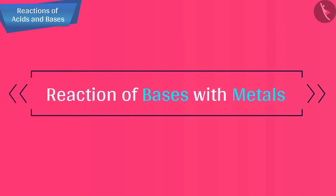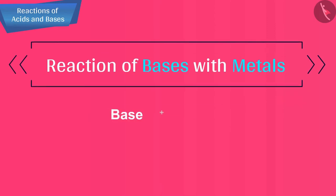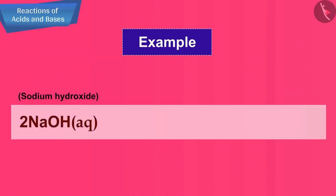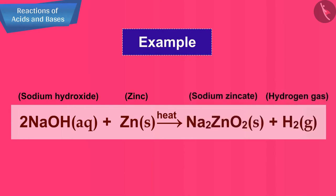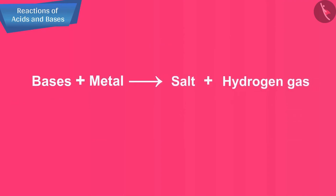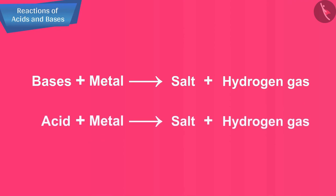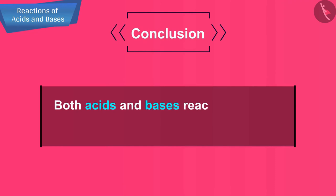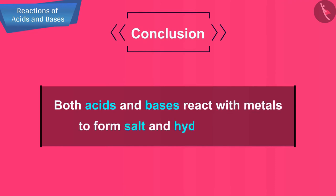Let's now talk about the reaction of bases with metals. When a base reacts with a metal, then a metal salt and hydrogen gas are formed. For example, when sodium hydroxide solution is heated with zinc, then sodium zincate and hydrogen gas are formed. We can show the formation of hydrogen gas in the reaction of sodium hydroxide solution with zinc metal by using the same experimental setup as we used to study the reaction of metal with acids. So we can conclude that both acids and bases react with metals to form salt and hydrogen gas.